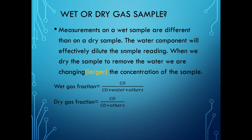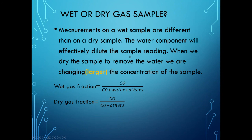Measurements on a wet sample differ from those on a dry sample — the water component effectively dilutes the sample reading. If you expect to measure one cubic centimeter out of 100 cubic centimeters of gas, but 40 cubic centimeters are actually liquid, you're really measuring one cubic centimeter out of 60, giving a false higher concentration. That's what this section addresses — having contaminants in your sample affects the actual measured concentration.